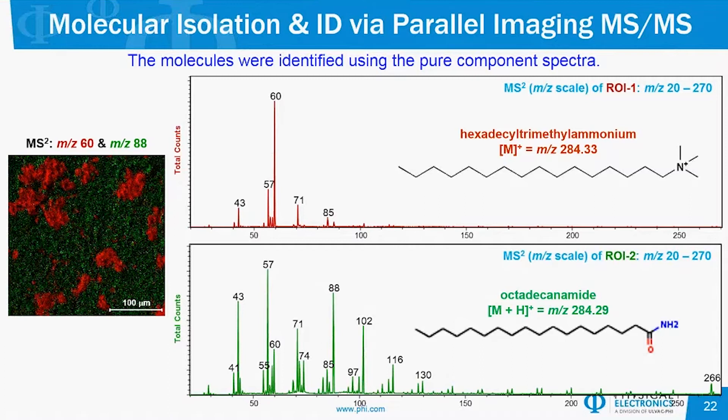Octadecanamide has an exact mass of 284.29, and hexadecyltrimethylammonium has an exact mass of 284.33. It would take a mass resolution of about 9,000 to fully resolve those peaks. In this particular case, the sample was a little bit rough — you can see a shoulder at mass-to-charge ratio of 284, but the peaks are not resolved. So the tandem MS identification and imaging comes in really handy for the identification.